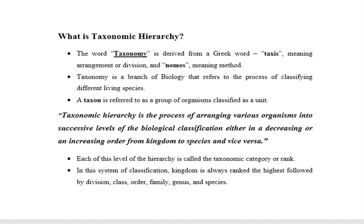Taxonomic hierarchy is the process of arranging various organisms into successive levels of biological classification, either in a decreasing or an increasing order from kingdom to species and vice versa. Each of these levels of hierarchy is called the taxonomic category or rank.